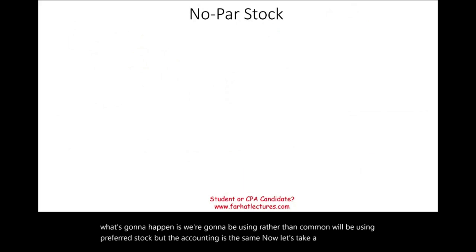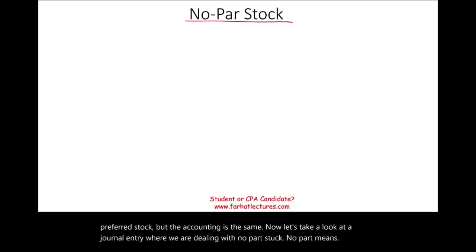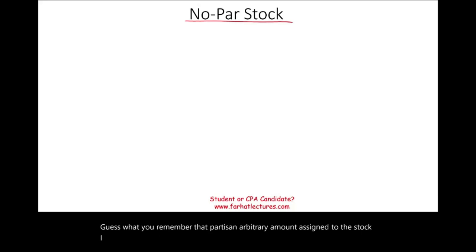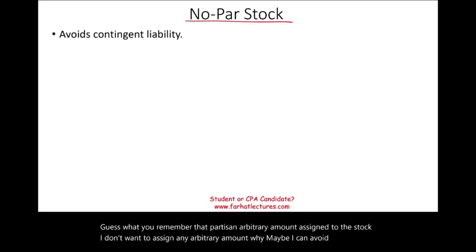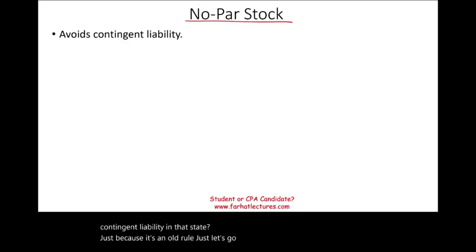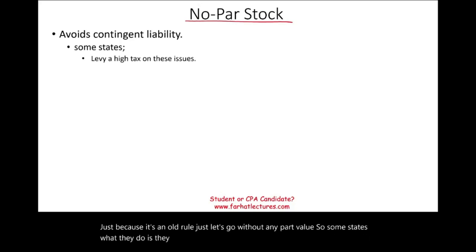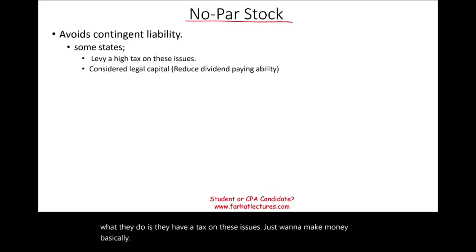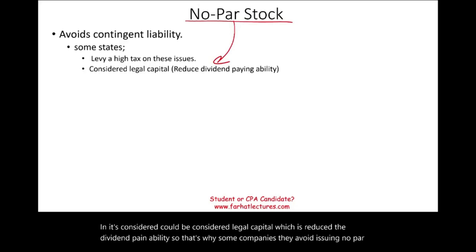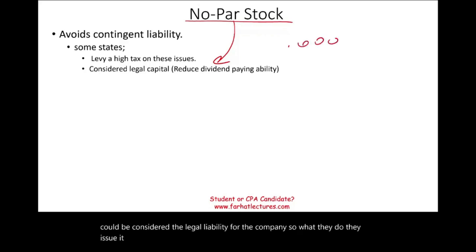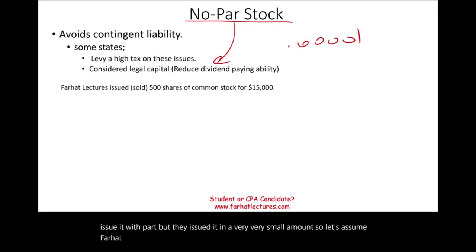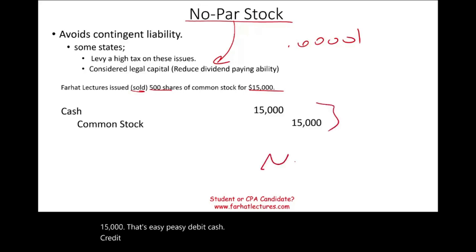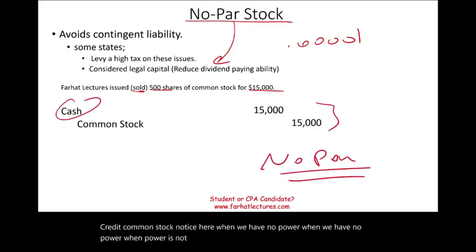Now let's look at a journal entry for no par stock. No par means no arbitrary amount is assigned to the stock — to avoid contingent liability or because it's an old rule. Some states tax these issues or consider the full amount as legal capital, which would reduce dividend-paying ability. That's why some companies issue stock with a very small par value instead. But if issuing no par stock: simply debit cash and credit common stock for the full amount received — no paid-in capital in excess of par needed.